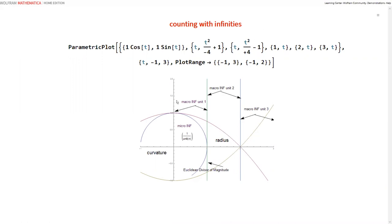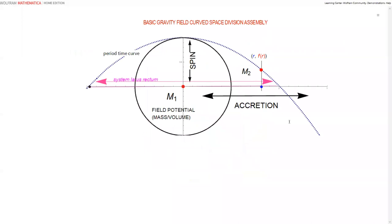So even outside the boundary of curvature we have unit 1 macro infinity, unit 2 macro infinity, unit 3 macro, on and on. It fits perfectly for a basic G field orbital. R f of r for position, position energy.